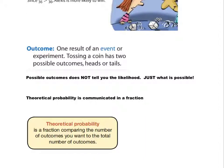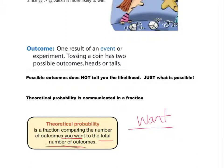An outcome is one result of an event or experiment. For example, tossing a coin has two possible outcomes: heads or tails. A possible outcome does not tell you the likelihood — it just tells you what is possible, not which is more likely or less likely. The theoretical probability is communicated as a fraction comparing the number of outcomes you want on top to the total number of possible outcomes on the bottom.